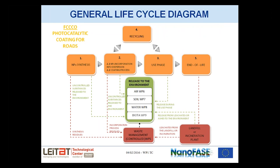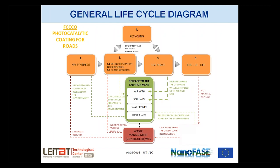The next example is the FCCCO photocatalytic coating for roads. Again, we have nanoparticle synthesis, incorporation into dispersion, and a coating process. In the use phase, instead of ending up in water as in the previous case, release goes mainly to air and soil. Regarding recycling, the industrial partner informed us that around 10% of the materials are recycled into new asphalt, so we should account for residual nanoparticles re-entering use. Regarding end of life, the asphalt that is not recycled will end up in a landfill deposit, from which it could go to the environment or to waste management facilities.